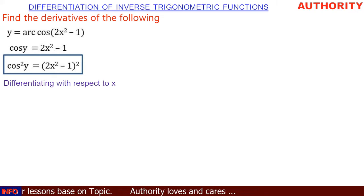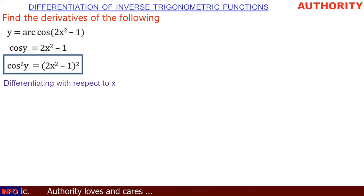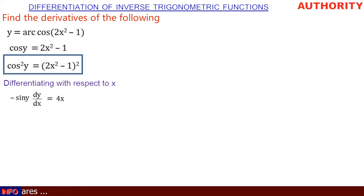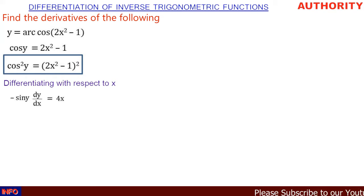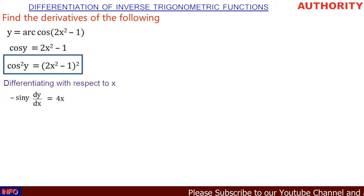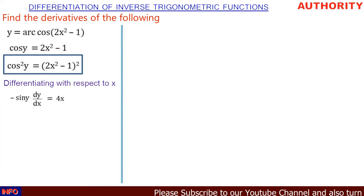So now let's differentiate the function. We have cos y = 2x² - 1, so differentiating gives us -sin y · dy/dx = 4x.